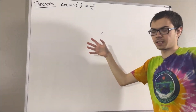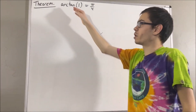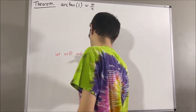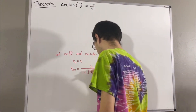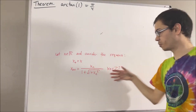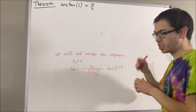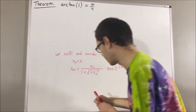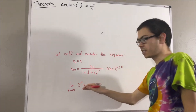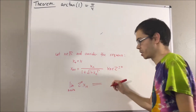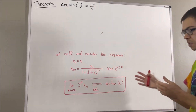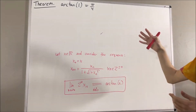First of all, let's get some context. Let's remind ourselves of our definition of the arctangent function. Let x be any real number and consider the following sequence. The sequence 2 to the n times xn converges, and we defined the value that this sequence converges to be the arctangent of x. From here, we've proven several properties of the arctangent function, one of which is the following.